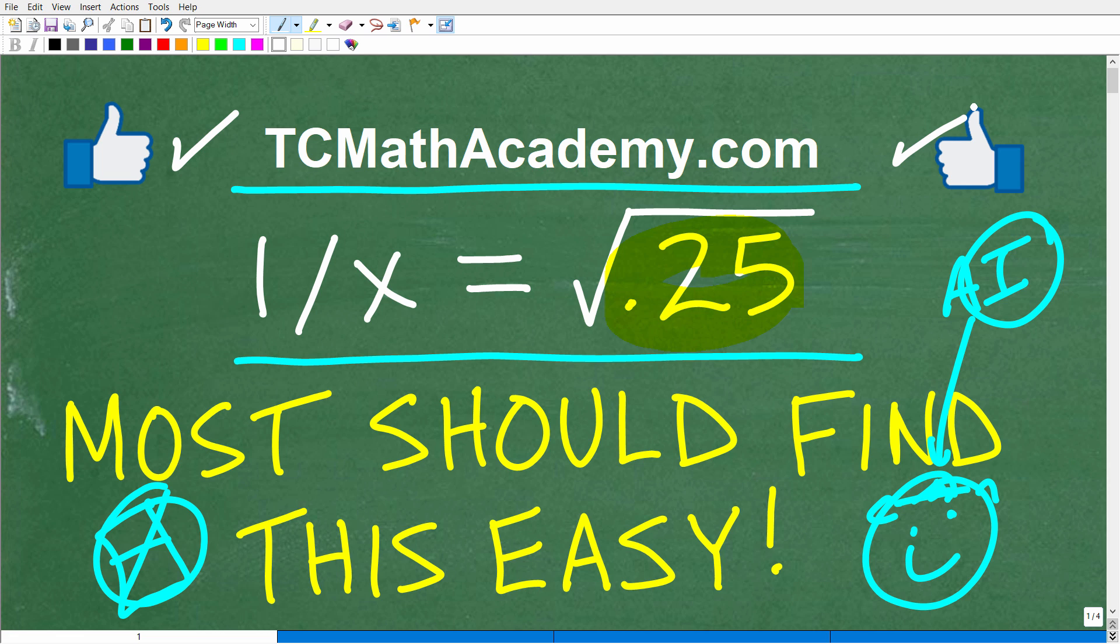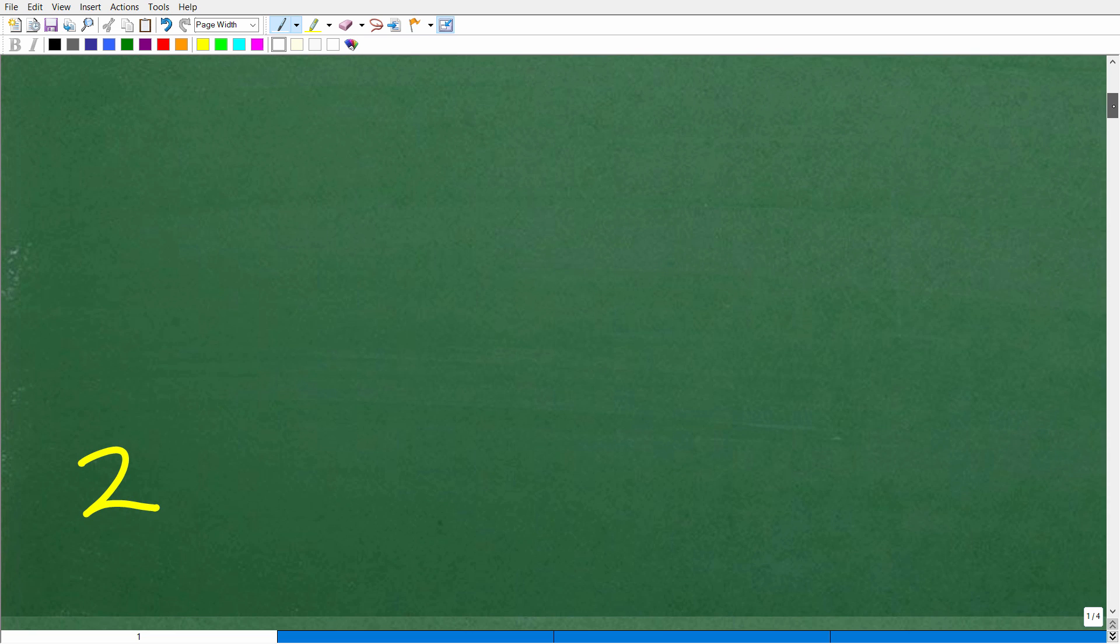Okay, so 1 over x is equal to the square root of 0.25. Again, we're not going to use our calculator. Let's go take a look at the answer. The correct answer is 2.